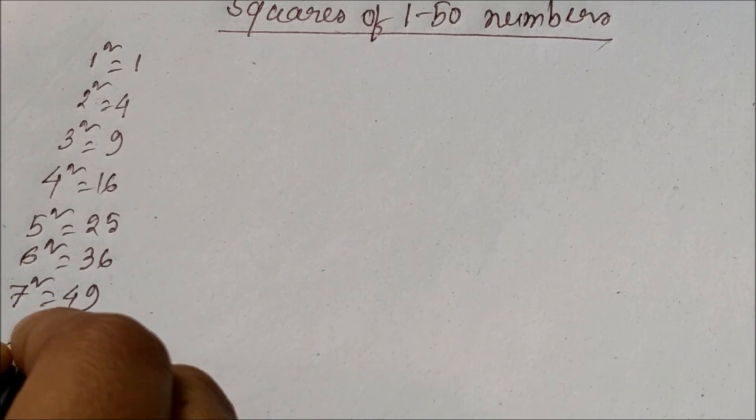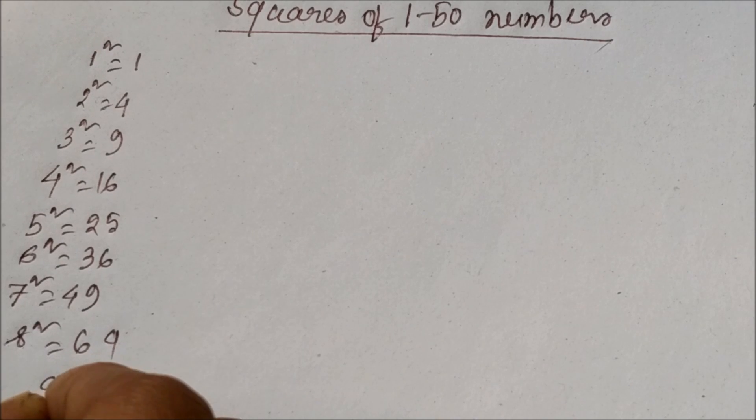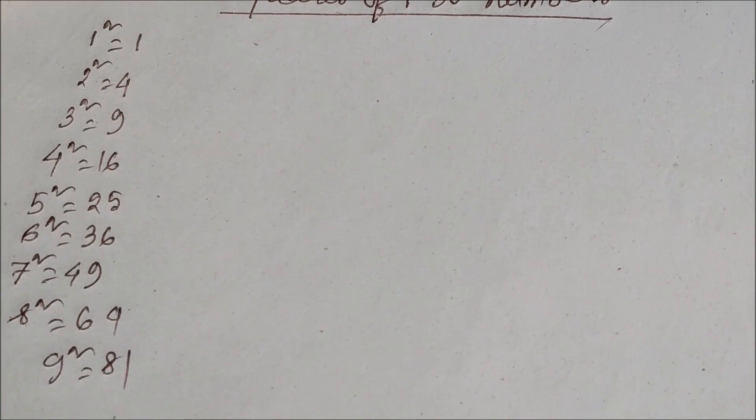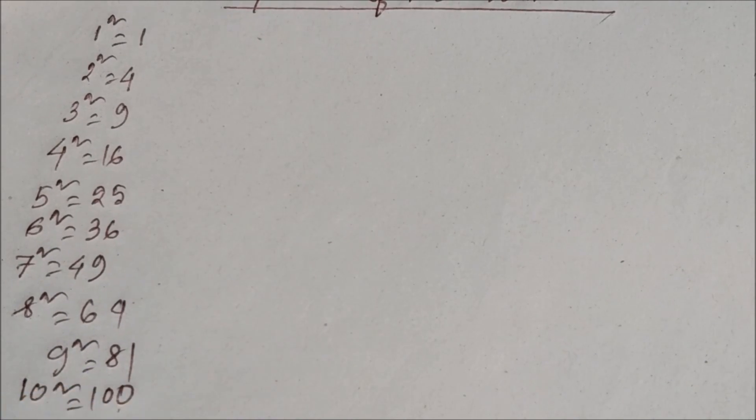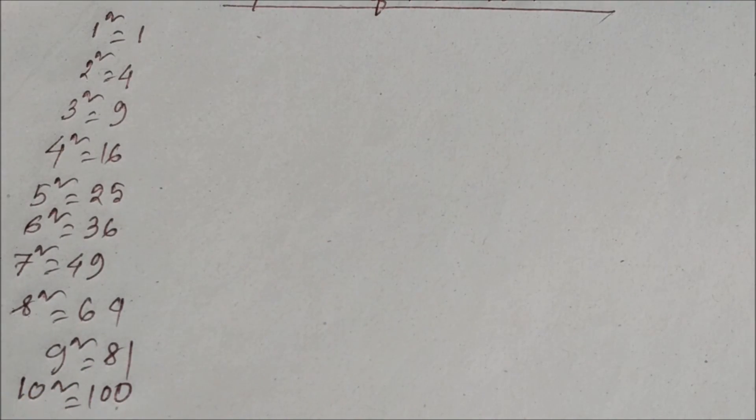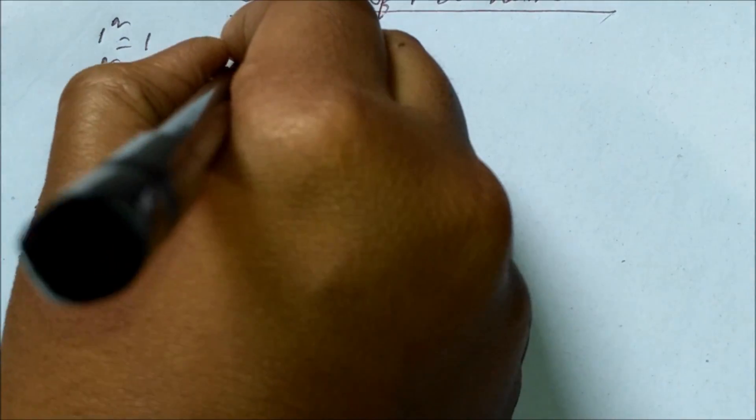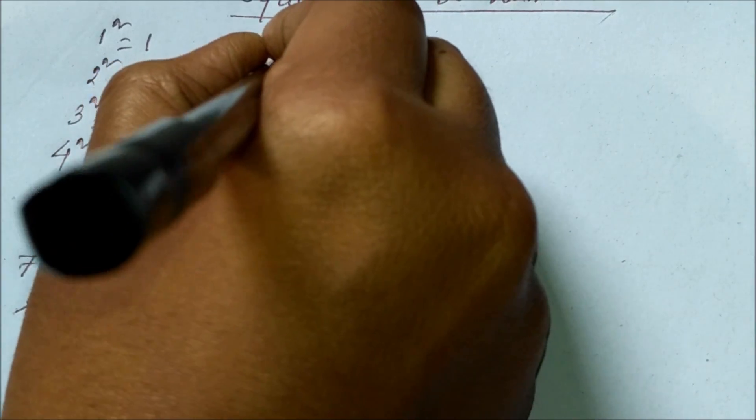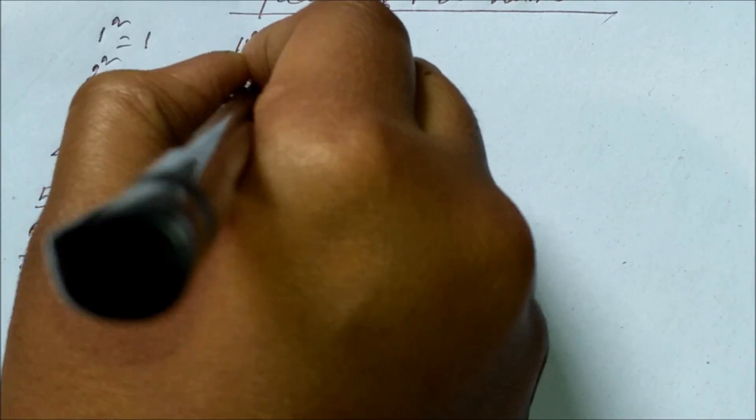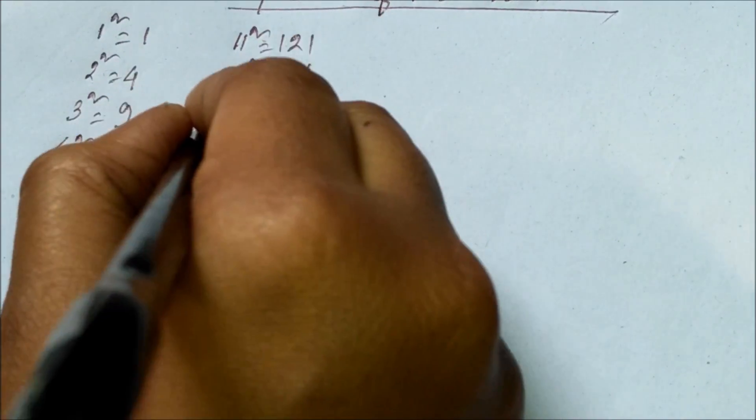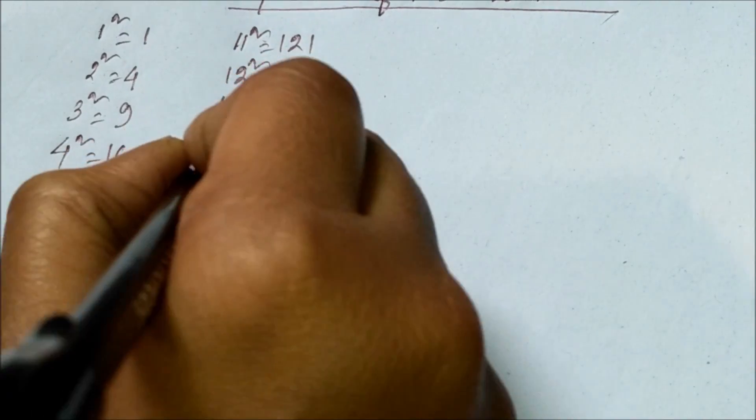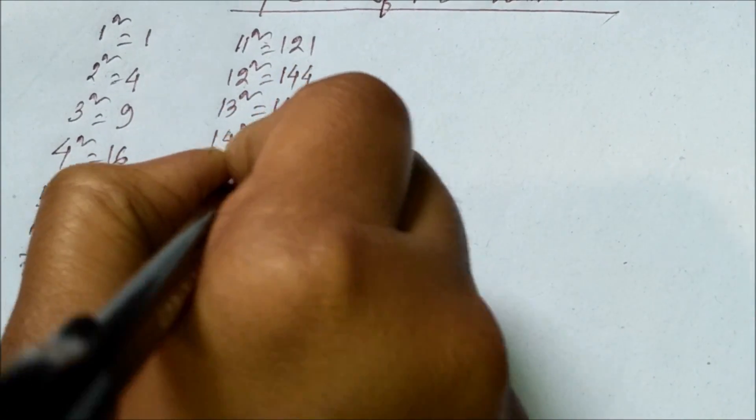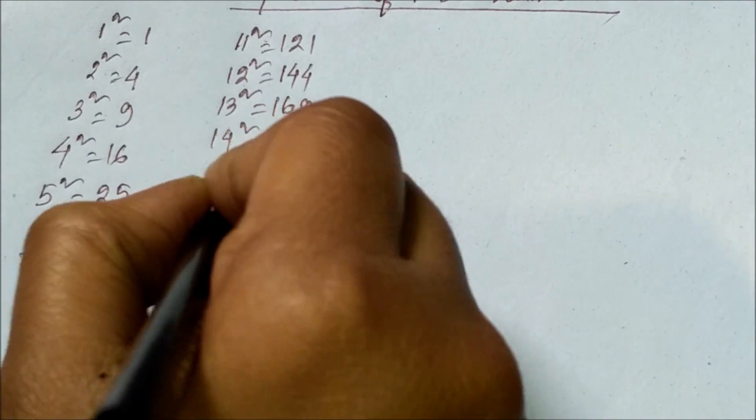8 square equals 64, 9 square equals 81, 10 square equals 100, 11 square equals 121, 12 square equals 144, 13 square equals 169, 14 square equals 196, 15 square equals 225, 16 square equals 256.